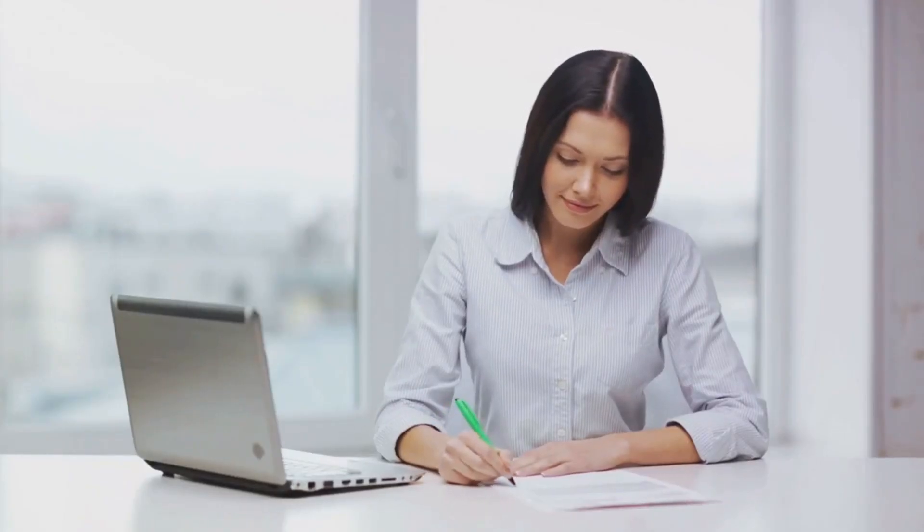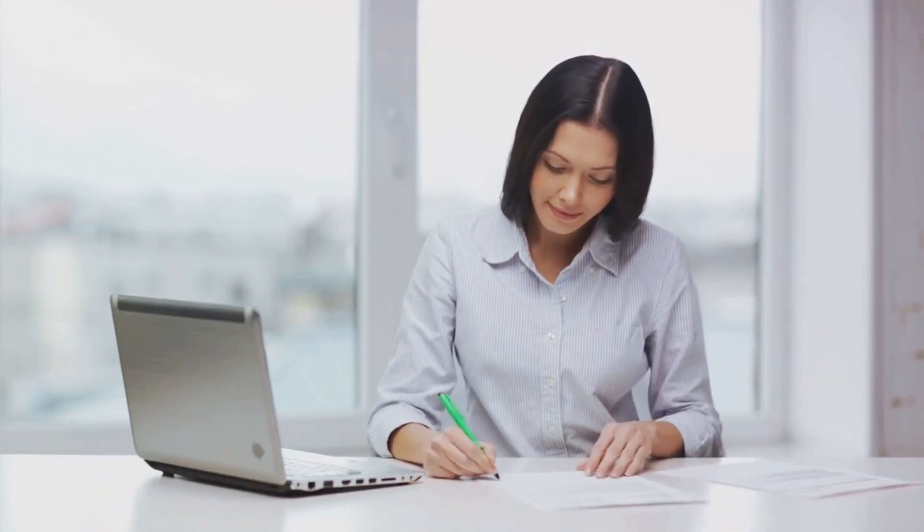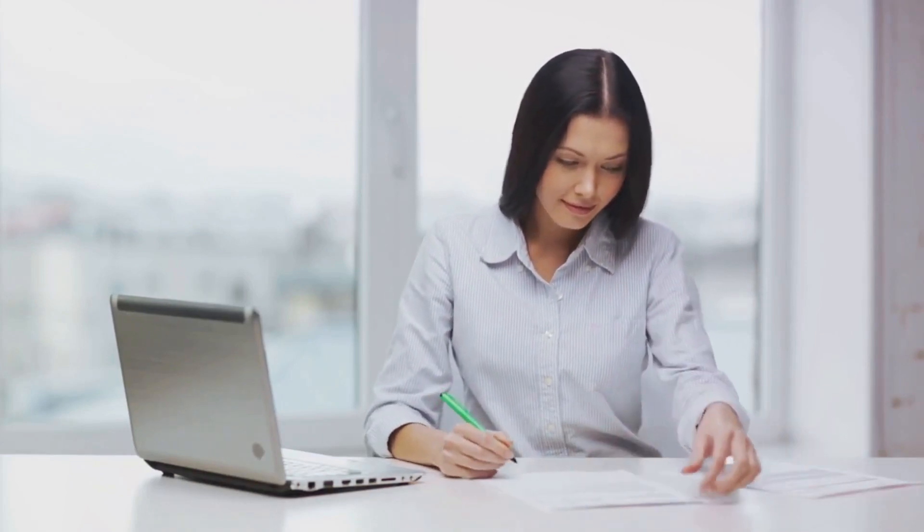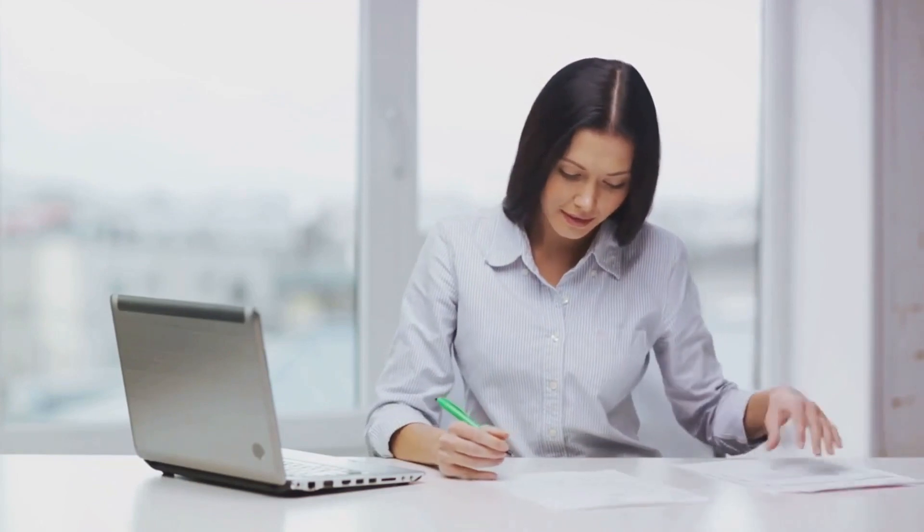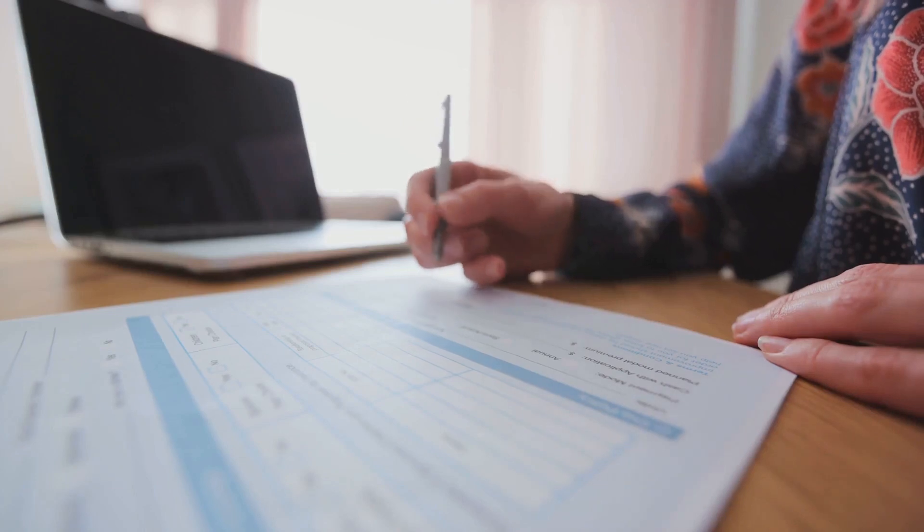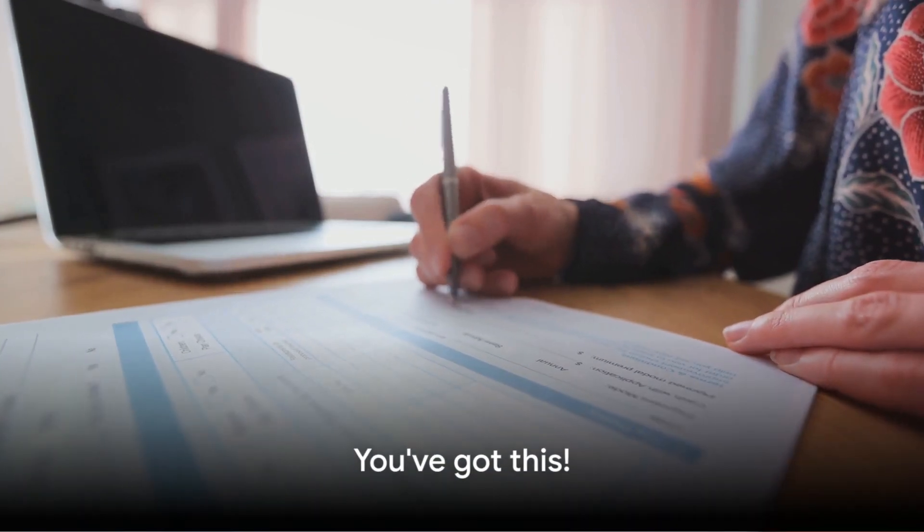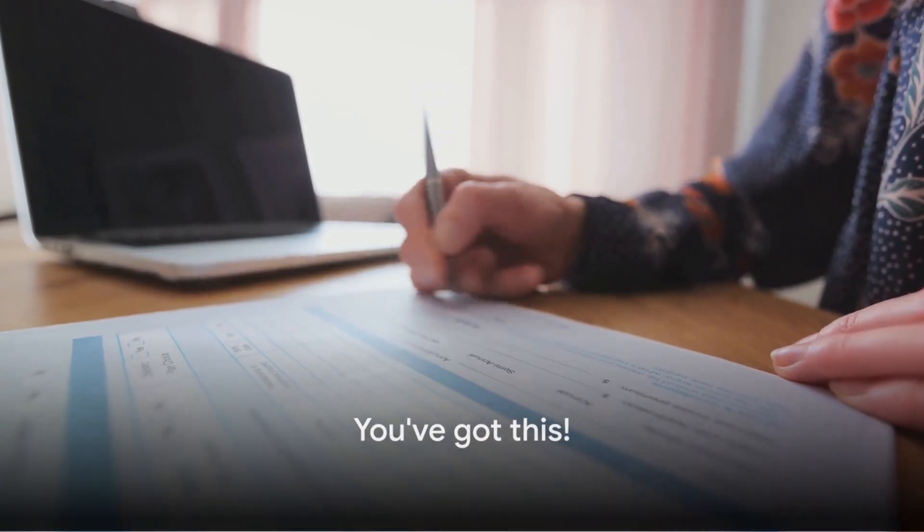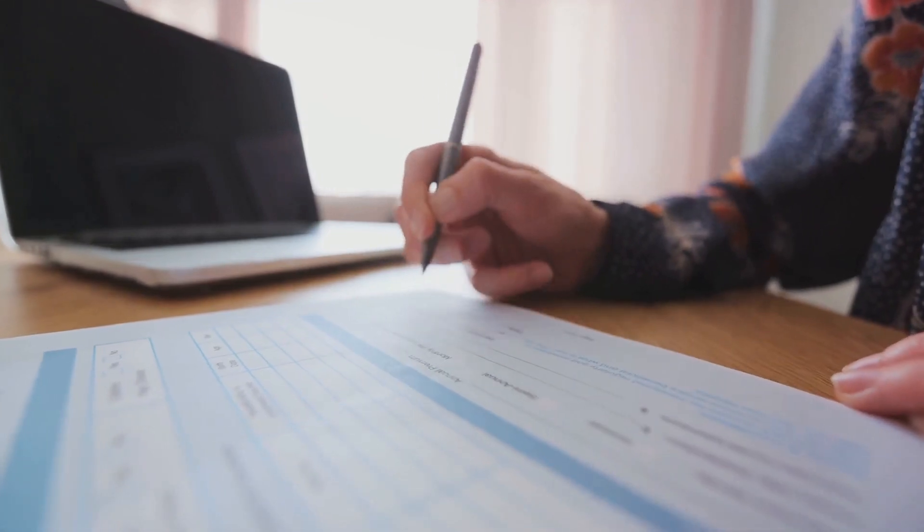By following these steps, you can register and manage your business in the UK while holding a Tier 2 visa, ensuring compliance with all relevant regulations, and maintaining your visa status. This might seem like a lot to take in, but don't worry. You've got this.